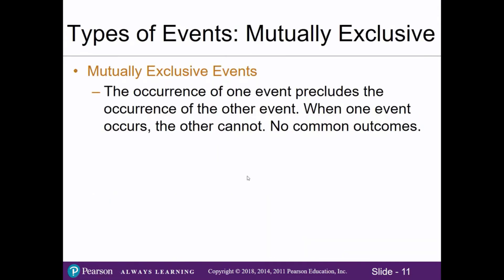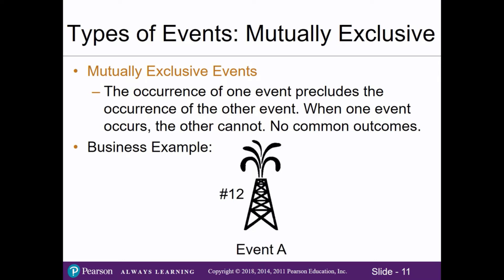It's important to understand the types of events. First, mutually exclusive events: the occurrence where one event cannot happen at the same time as another — there's no overlap. For example, if we're drilling oil rig number 12, event A is that we strike oil and event B is that there's no oil. You either have oil or you don't — they can't happen at the same time.